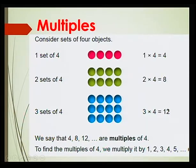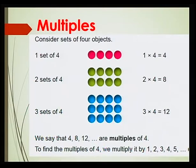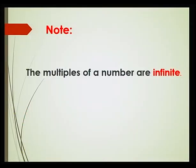Now 4, 8 and 12 are called the multiples of 4. To find the multiples of 4, we multiply 4 by 1, 2, 3, 4, 5 and so on. What you can notice is that the multiples of a number are infinite — this means that we never stop.